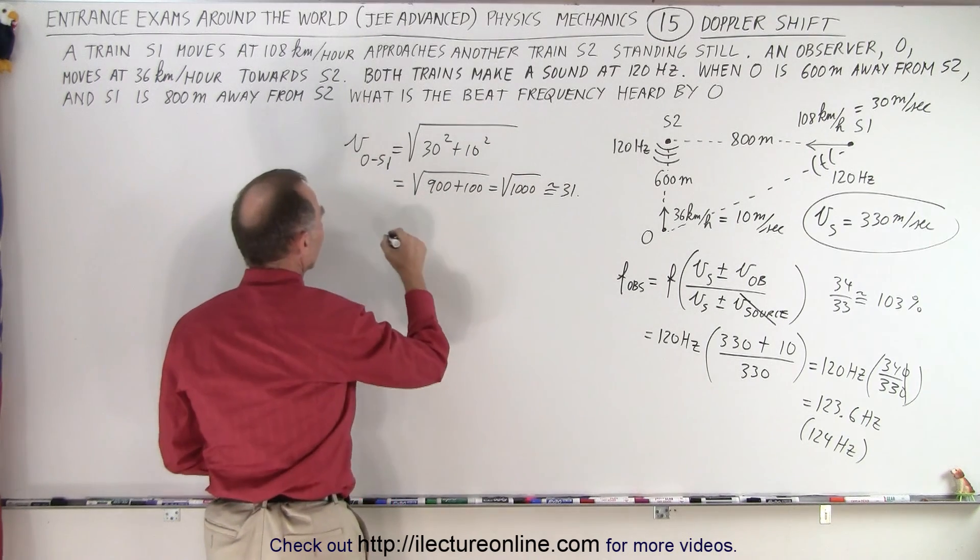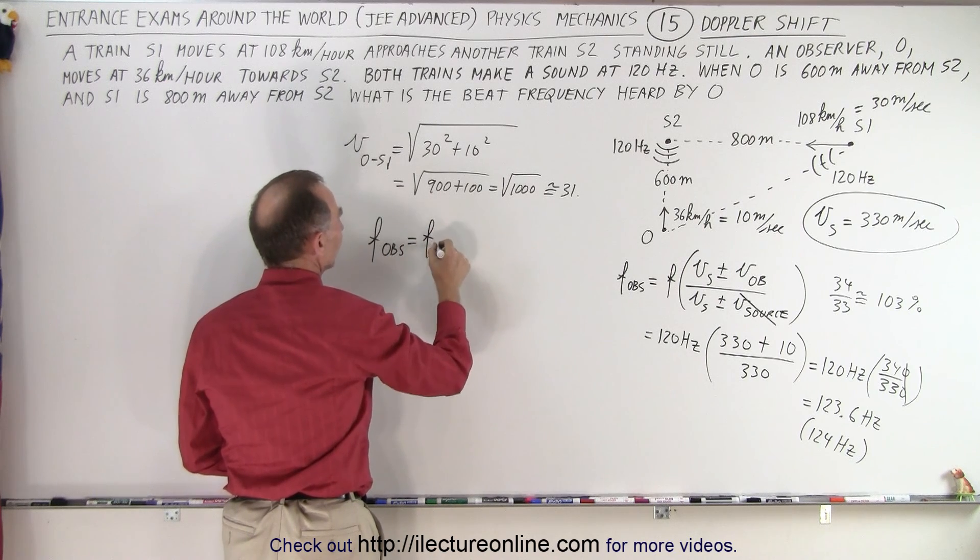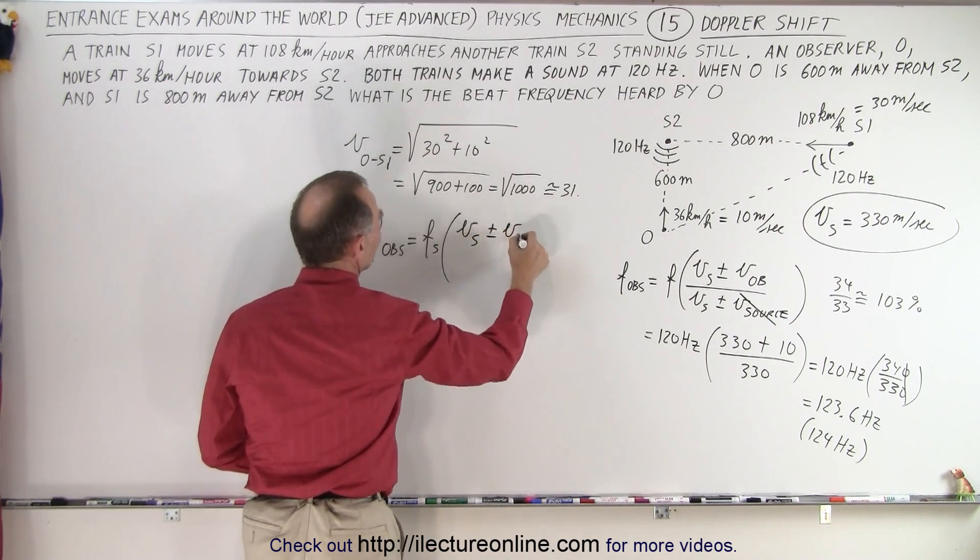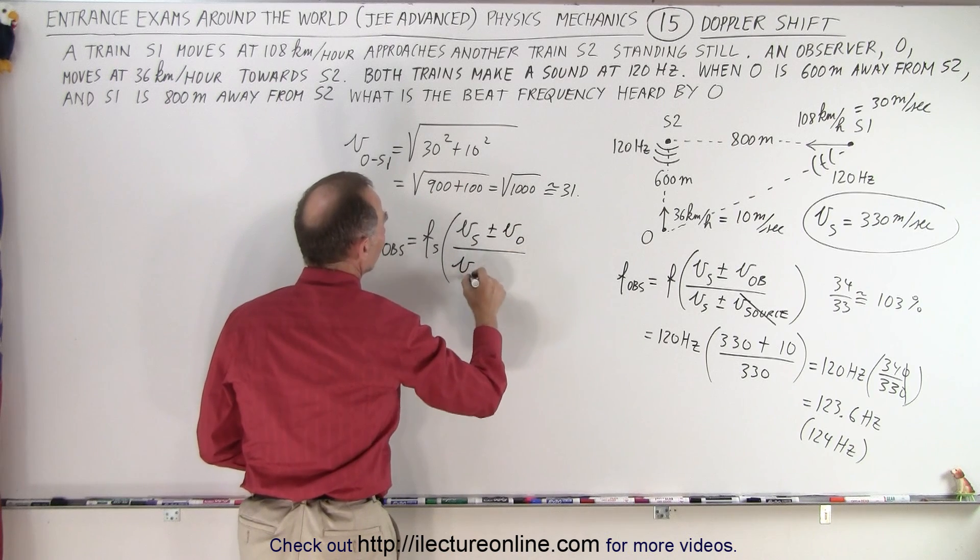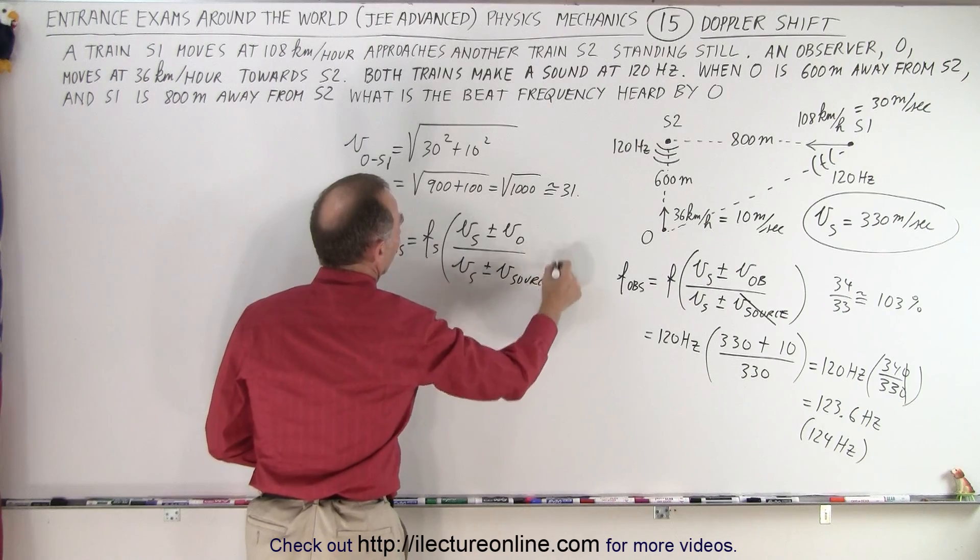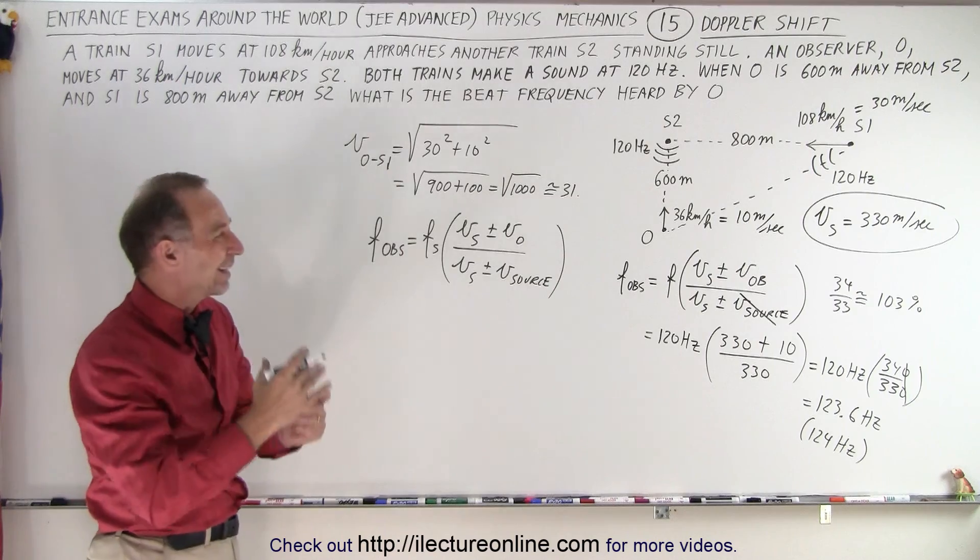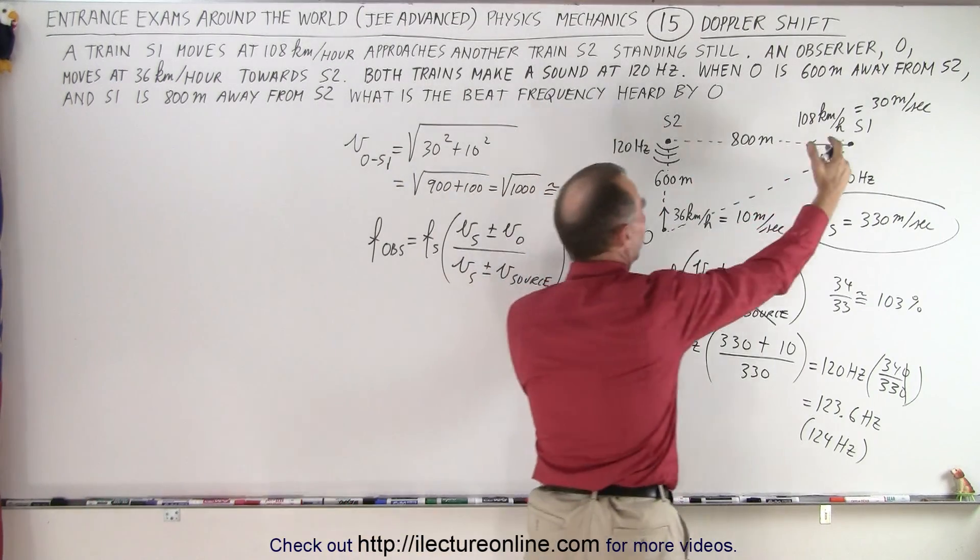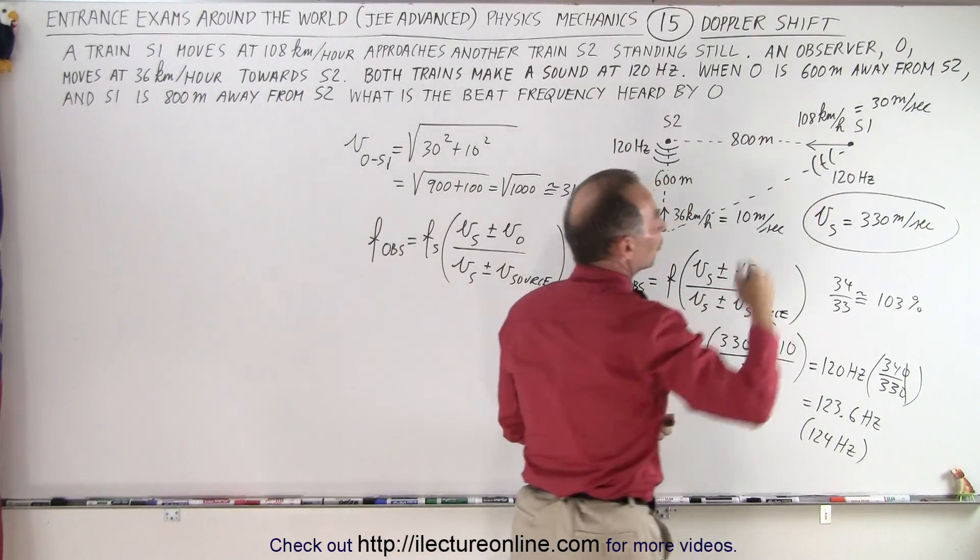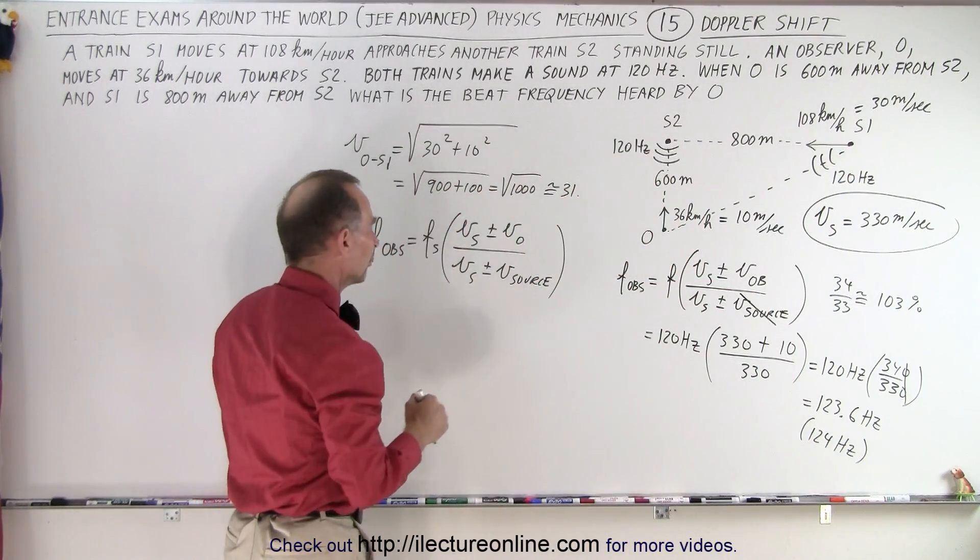So now what we're going to do again is we're going to do the frequency observed is equal to the frequency of the source times the velocity of sound plus or minus the velocity of observer divided by the velocity of sound plus or minus the velocity of the source. Now, of course, both the observer and the source are moving, but let's just combine it together into a single closing velocity. Just kind of assume that the observer is moving towards the source. It's roughly the same result and that the source isn't moving.